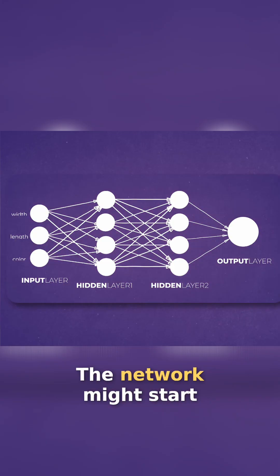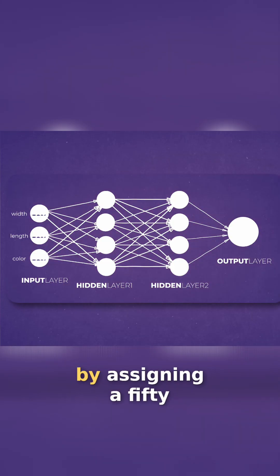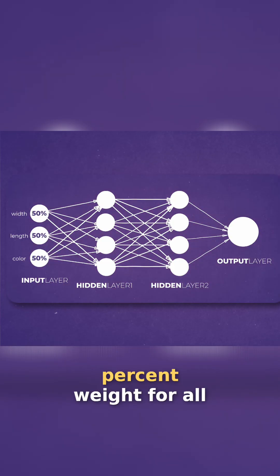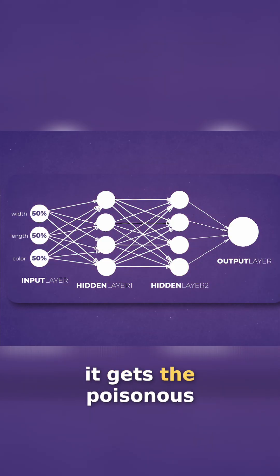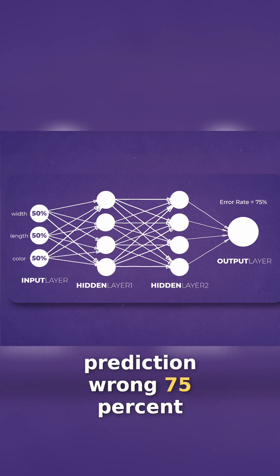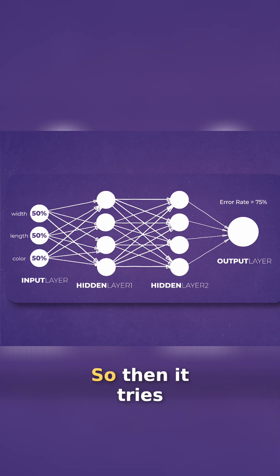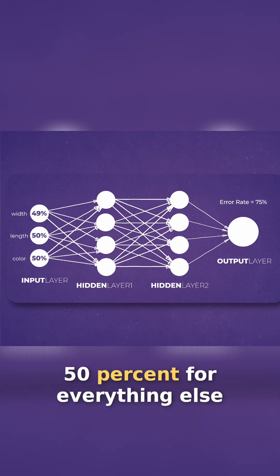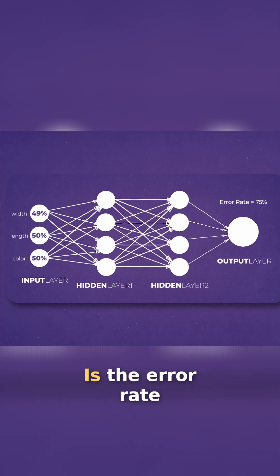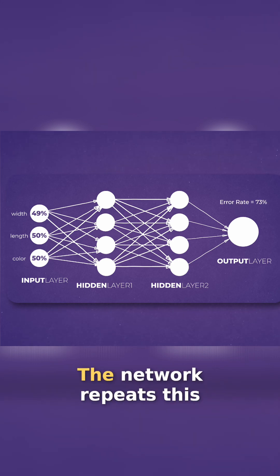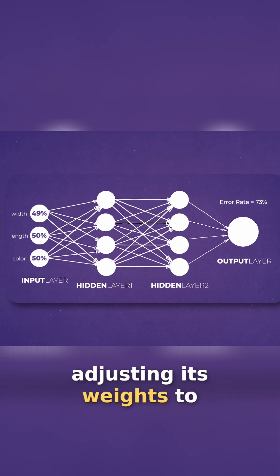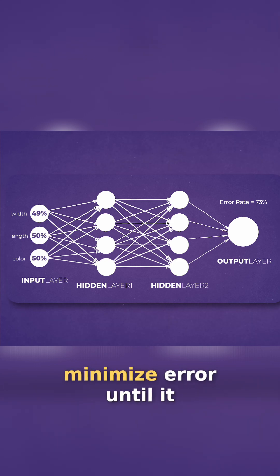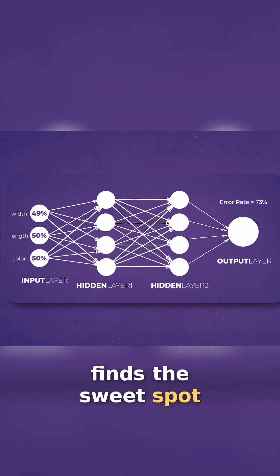Back to our leaf example. The network might start by assigning a 50% weight for all features, and then realizes it gets the poisonous prediction wrong 75% of the time. So then it tries 49% for length, 50% for everything else. Is the error rate lower or higher? The network repeats this millions of times, adjusting its weights to minimize error until it finds the sweet spot.